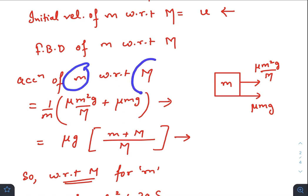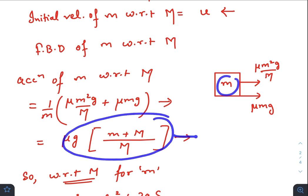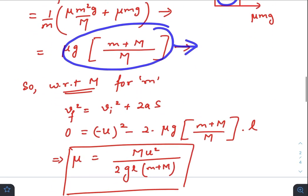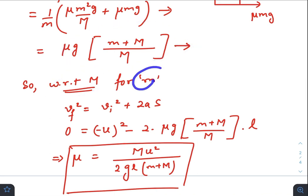So the net acceleration of small m with respect to capital M would be just take the total force divided by small m. You will get this one and the direction is towards right.